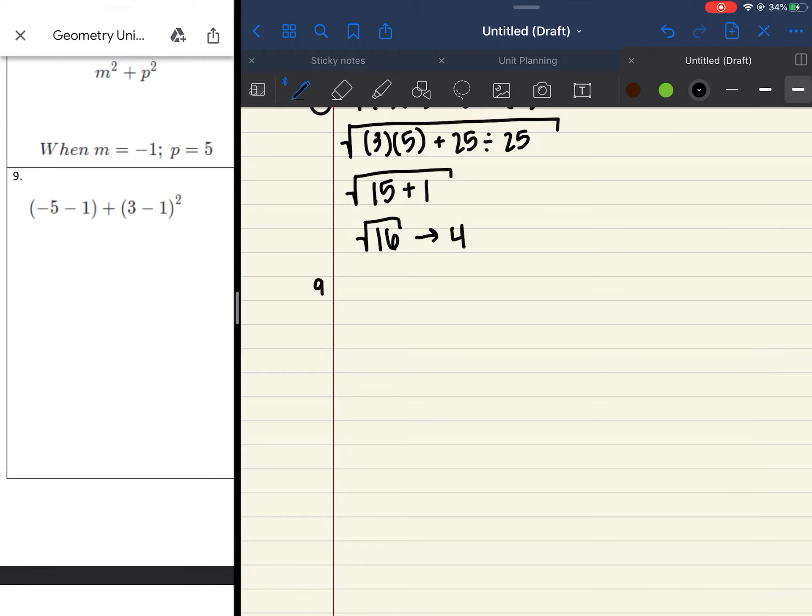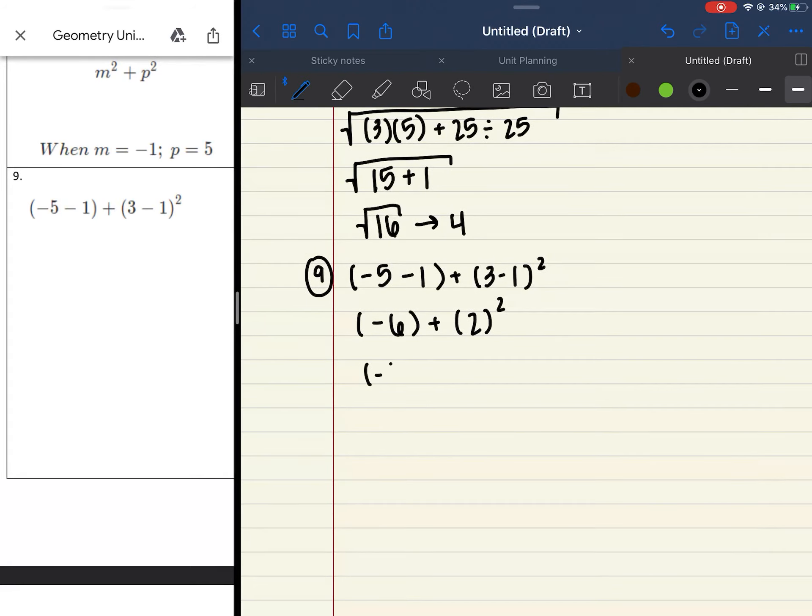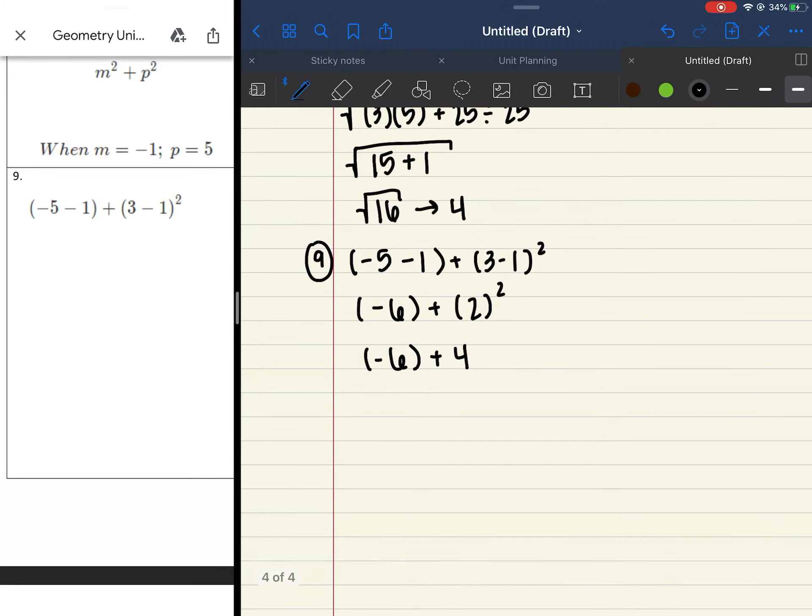So number 9 is another expression, another PIMDAS we're going to do. Negative 5 minus 1 plus 3 minus 1 squared. We're going to do anything in parentheses first. So I have negative 5 minus 1, which is negative 6. Plus you have 3 minus 1, which is 2 squared. I now do that exponent. So I'm going to leave the negative 6 alone plus 2 squared gives me 4. And then finally, negative 6 plus 4 leaves me with negative 2.